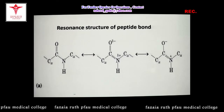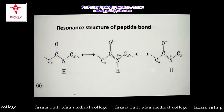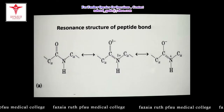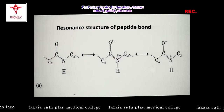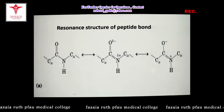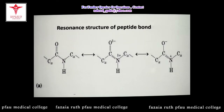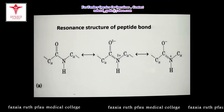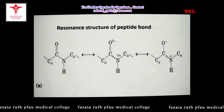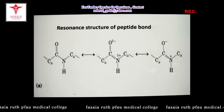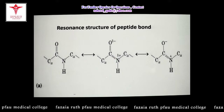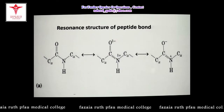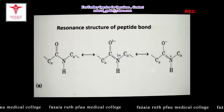There was a technique called X-ray crystallography that enabled us to determine the different levels of protein structure. According to X-ray crystallography, the peptide bond has characteristics of some double bond. The carbonyl oxygen has a partial negative charge and the amide nitrogen has a partial positive charge, so this peptide group is a polar group.